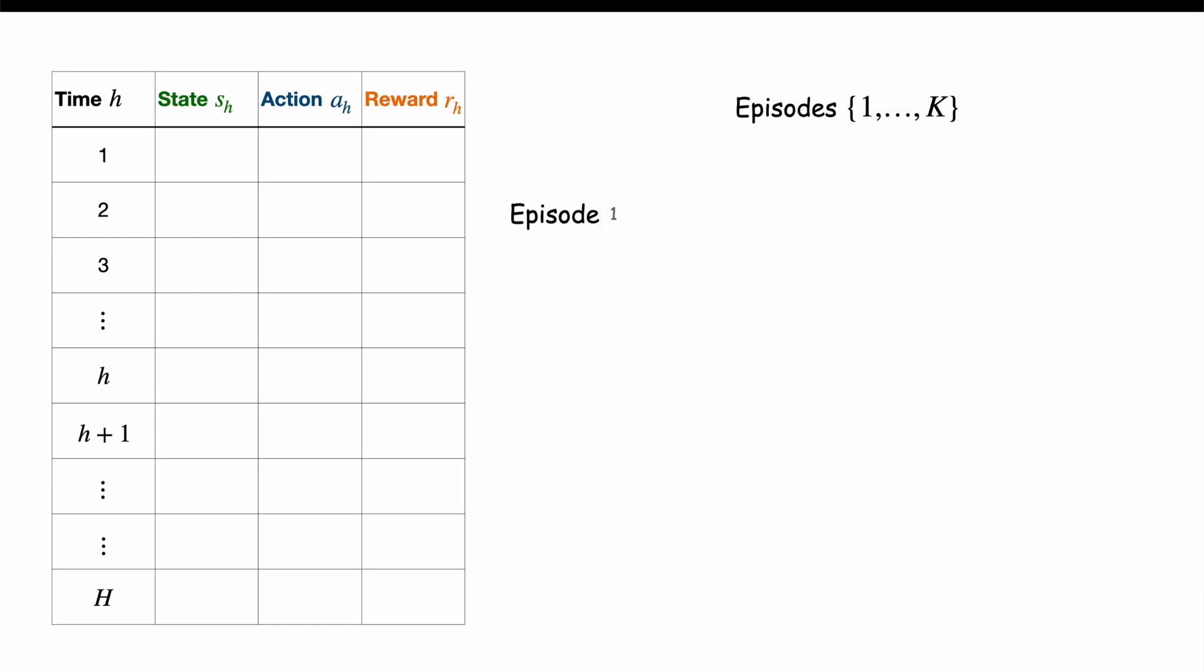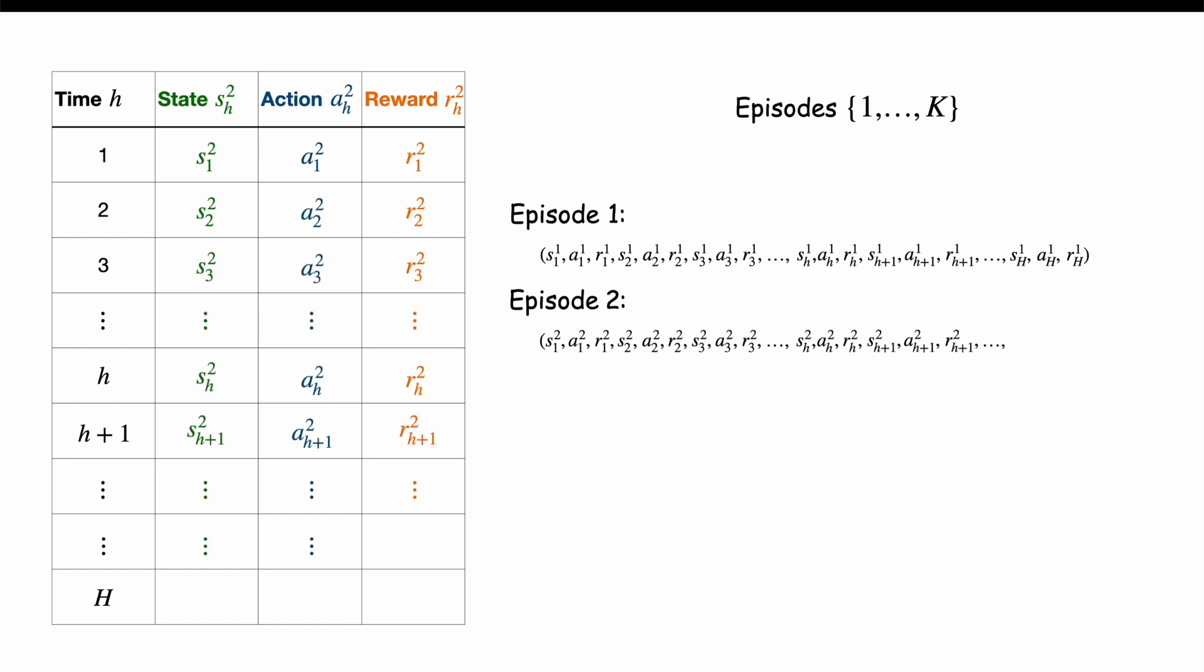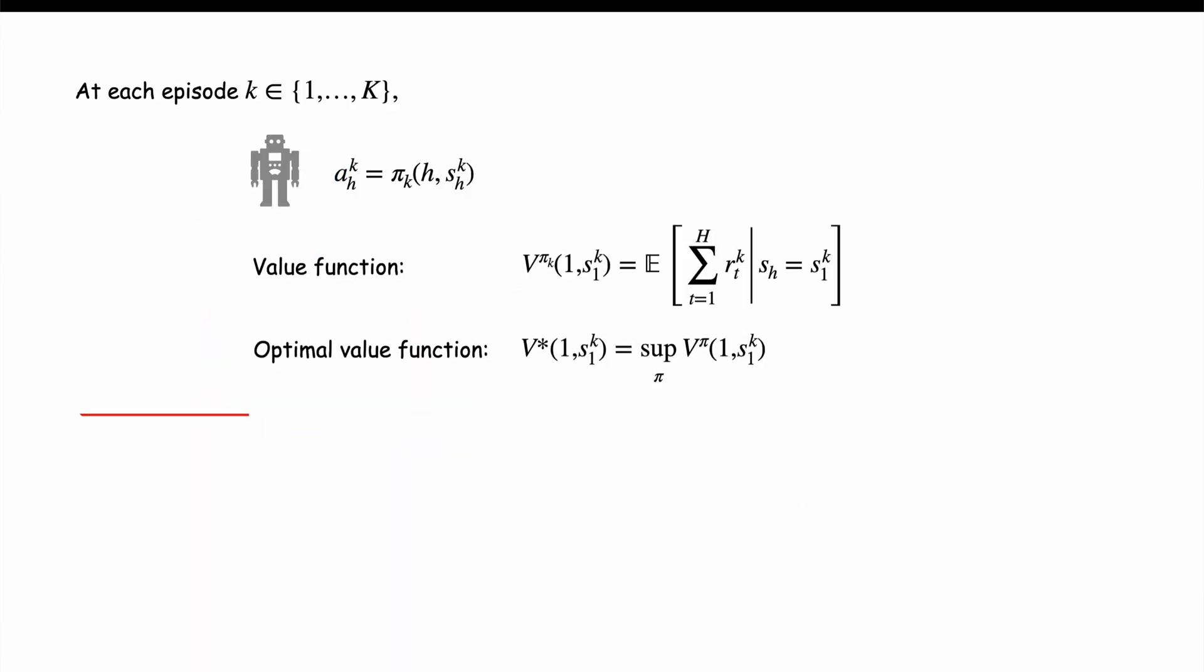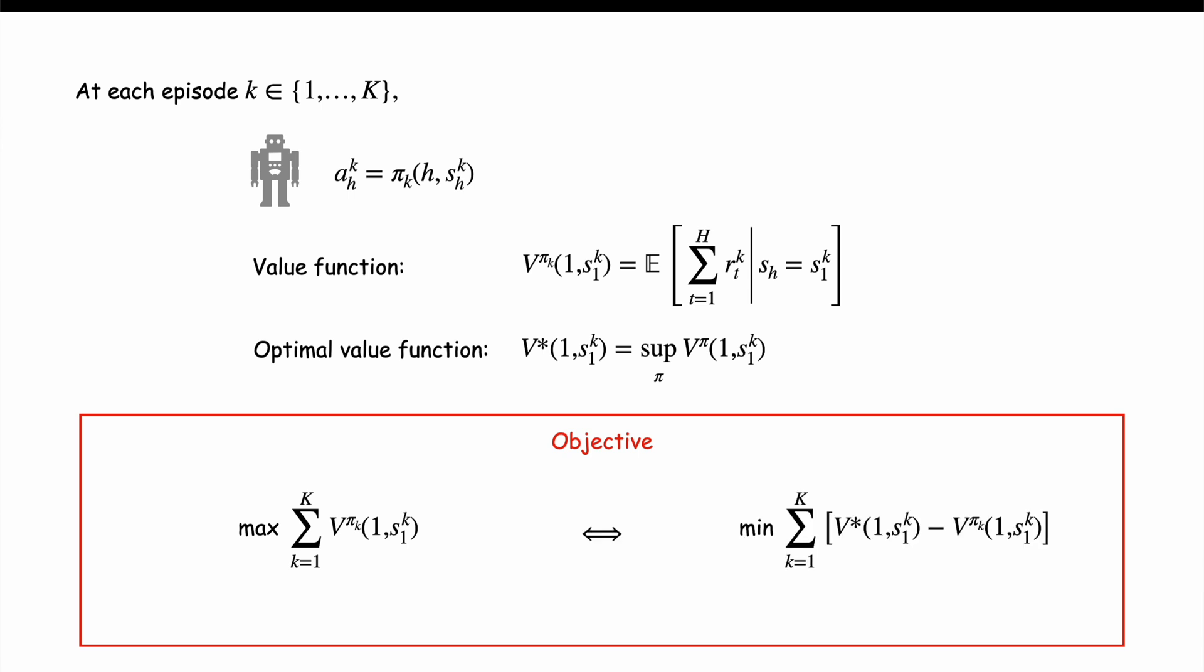We are going to run the above procedure capital K times called episodes. At each episode K equal to one, two until capital K, we are going to perform a strategy pi K and observe a trajectory composed of a state's actions and rewards SHK AHK RHK for all the times H from one to capital H. We hence collect capital K trajectories. The objective is now to maximize the value function over all the episodes with your sequence of strategies pi 1 to pi K. This is equivalent to minimizing the regret of your value function compared to the optimal value function.